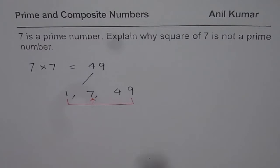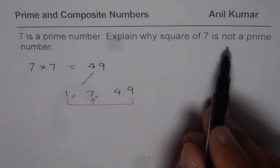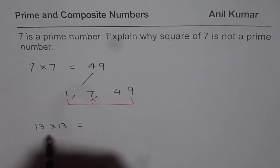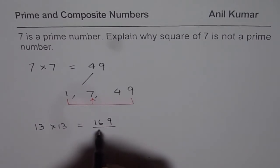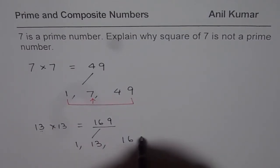In general, the square of any prime number will never be a prime number. If we take 13 for example, 13 times 13 equals 169. The factors of 169 are 1, 13, and 169.